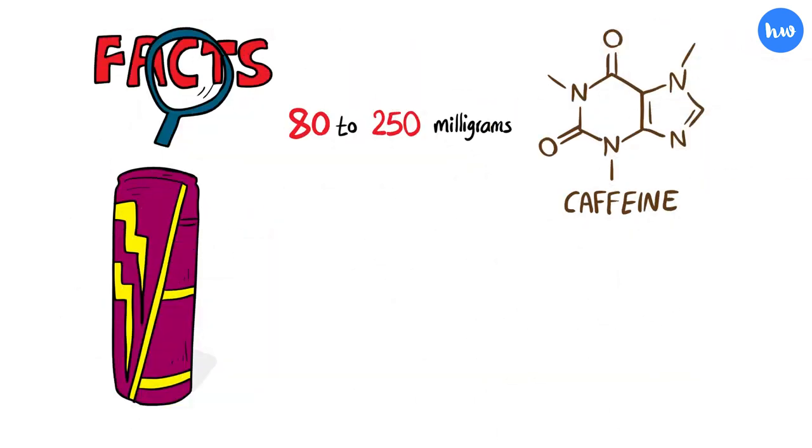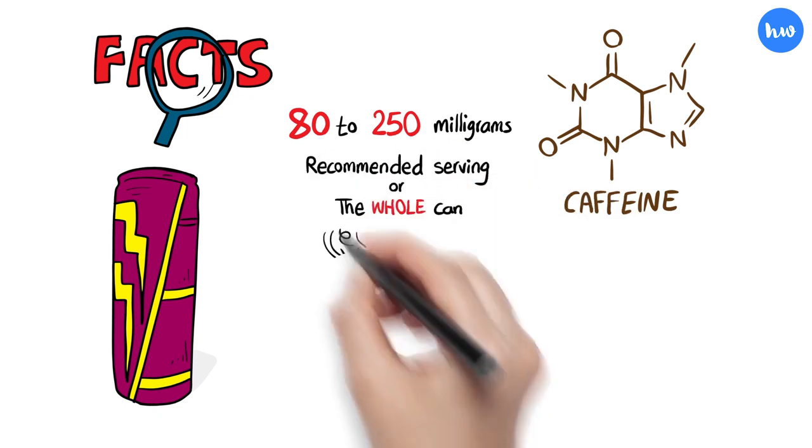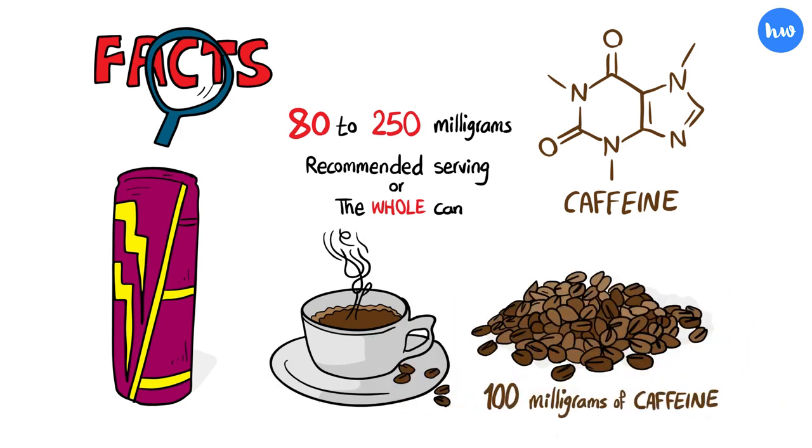The average energy drink contains between 80 to 250 mg of caffeine depending on if you only drink the recommended serving size or the whole can. A single cup of coffee is only about 100 mg of caffeine.